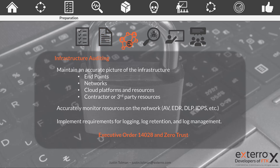Moving on to infrastructure auditing — this is super important, not just for the playbook, but this is pulled directly from Zero Trust and Executive Order 14028. You need to maintain an accurate picture of your infrastructure. This includes your endpoints that users are interacting with, your networks, what's connected to what, what resources are connected to what network, IP maps, all that sort of thing. What are your cloud platforms and resources, software that you're using? And if you use contractors or third-party resources, you need to know what is happening there. This is explicitly dictated within Zero Trust and reemphasized in the executive order, so it is included here in the playbook almost word for word.